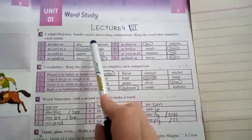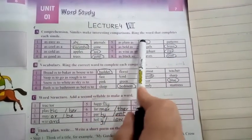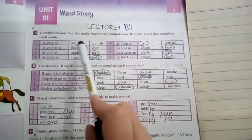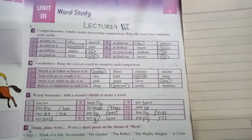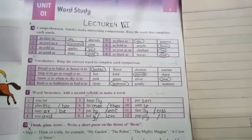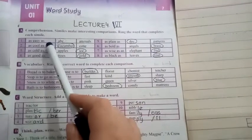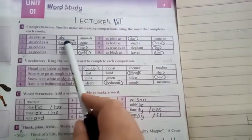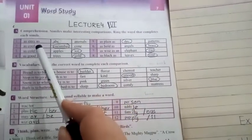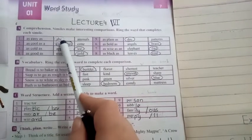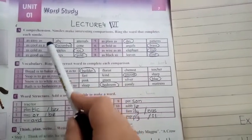Comprehension: similes make interesting comparisons. Ring the word that completes each simile. So first of all you should know what are similes. These are comparison words. When you compare one thing to another, that is called a simile. So the first statement is done for you: as easy as ABC or animal.